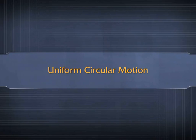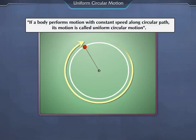Uniform Circular Motion. If a body performs motion with constant speed along circular path, its motion is called Uniform Circular Motion.